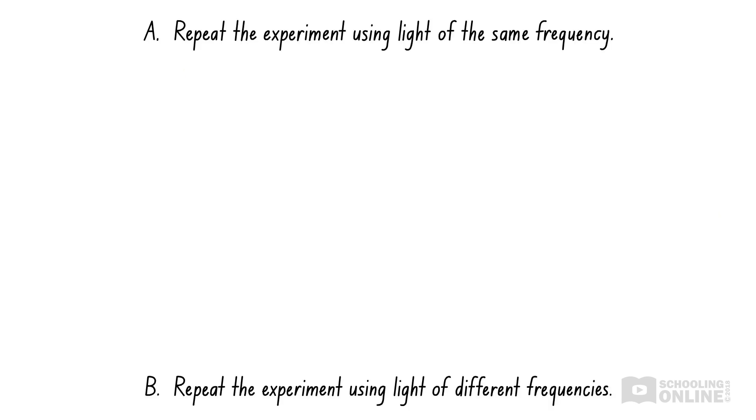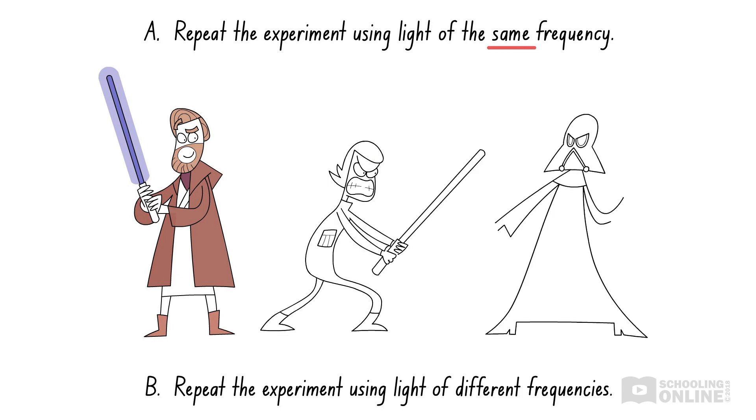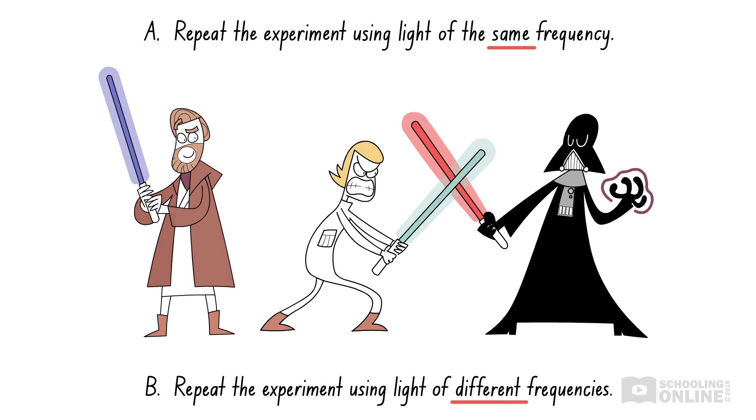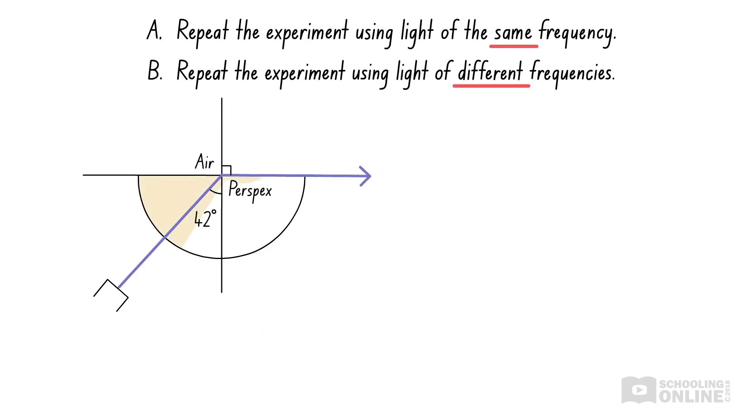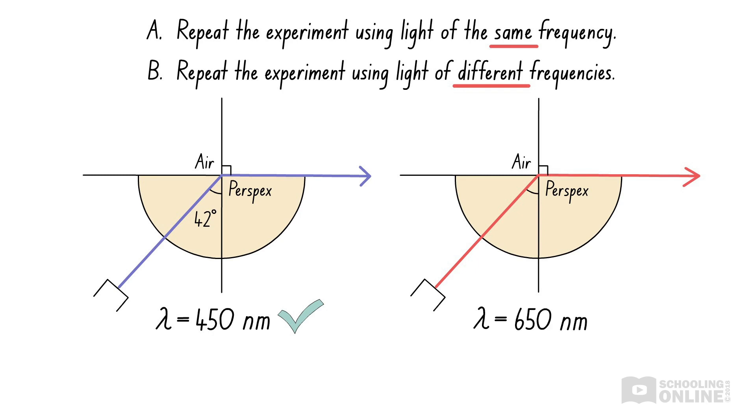Now, we are left with two options. Option A mentions that Anna should repeat the experiment with light of the same frequency. Meanwhile, option B suggests that she repeats the experiment using light of different frequencies. When we repeat our experiment to improve reliability, we should follow the same experimental procedure each time. Suppose that Anna changed her method to use a red laser with a wavelength of 650 nanometers. If she measured a different critical angle, she would not be able to discern whether this difference is due to random errors or choosing a different frequency. In fact, the speed of light in a material depends on both the material and the frequency of light. In turn, these factors affect the material's critical angle. Thus, repeating the experiment with light of different frequencies does not improve the reliability of results. For this reason, option B is incorrect.